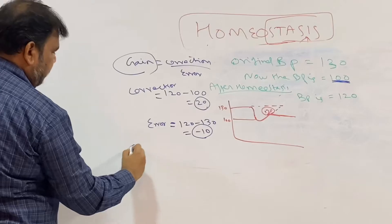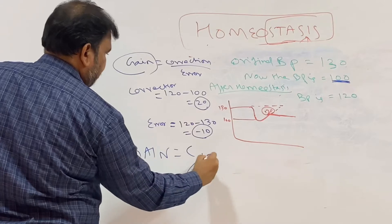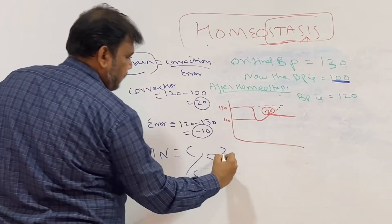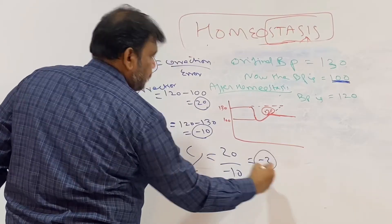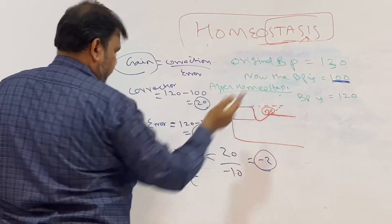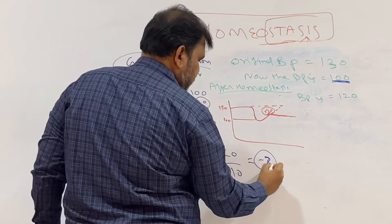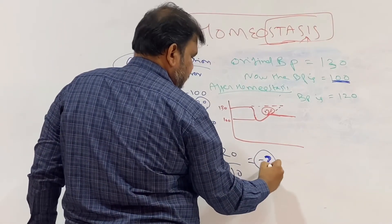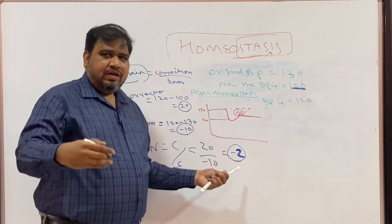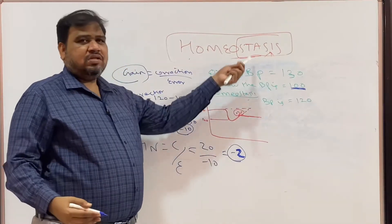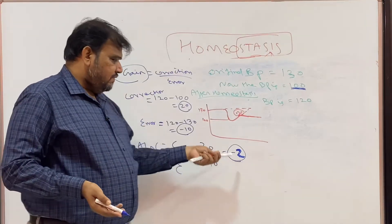Now applying the formula: gain equals correction divided by error. Correction is 20, error is minus 10, so gain equals 20 divided by minus 10, which equals minus 2. According to this scenario, the gain was minus 2. The negative sign reflects negative feedback. When the gain is more negative — like minus 3 or minus 4 — it means homeostasis is working more effectively.